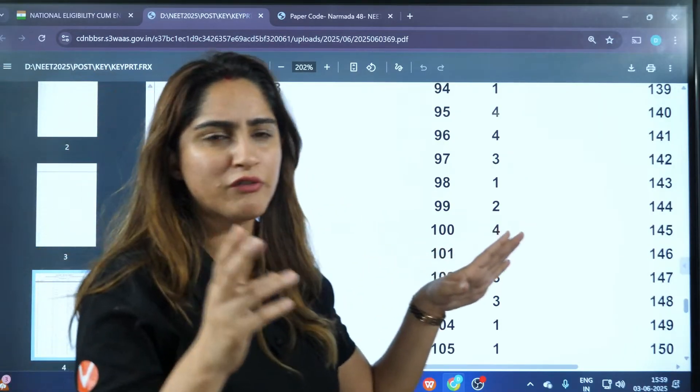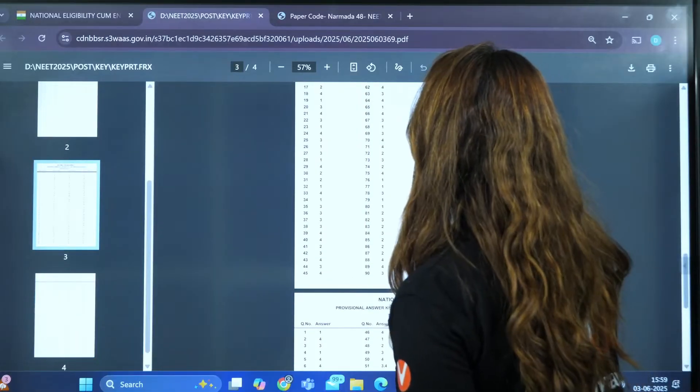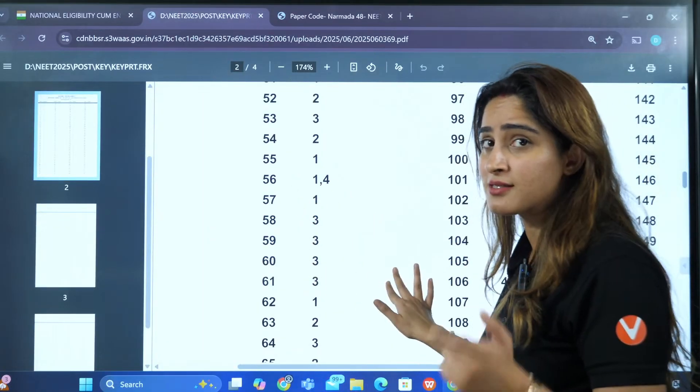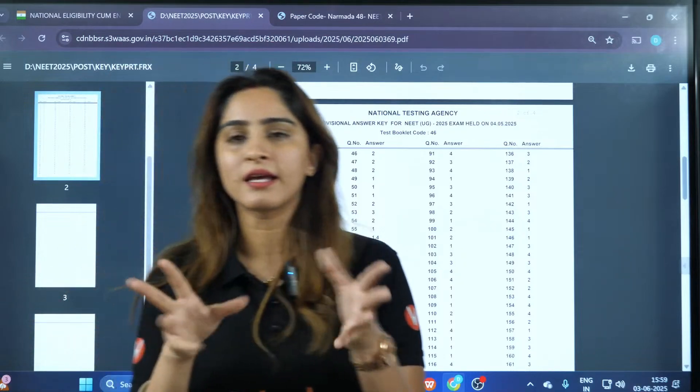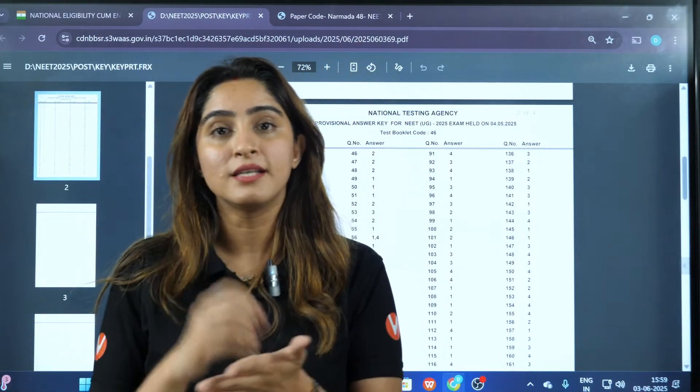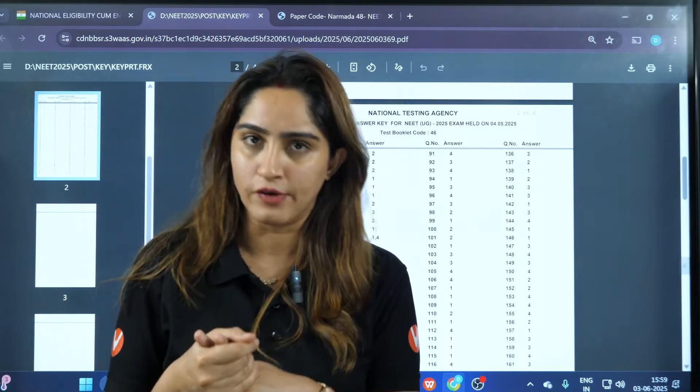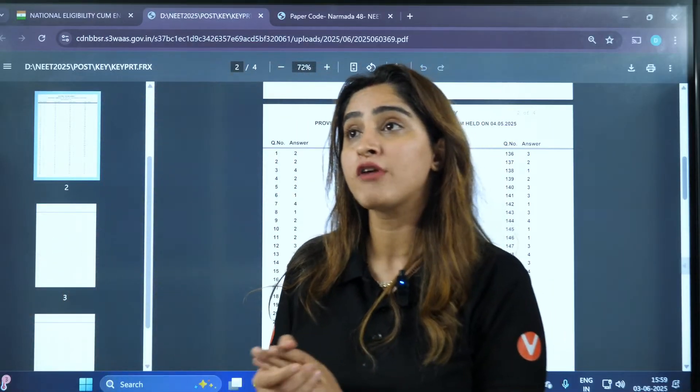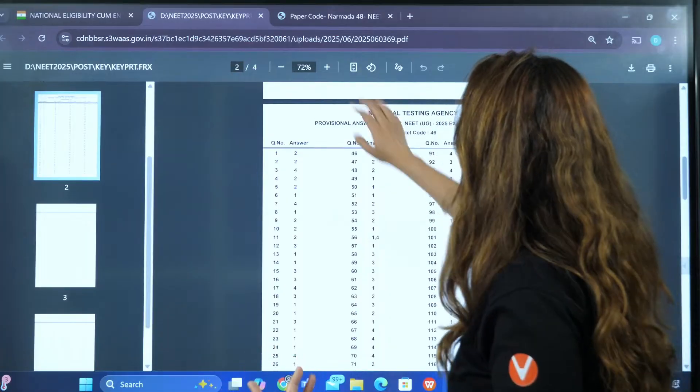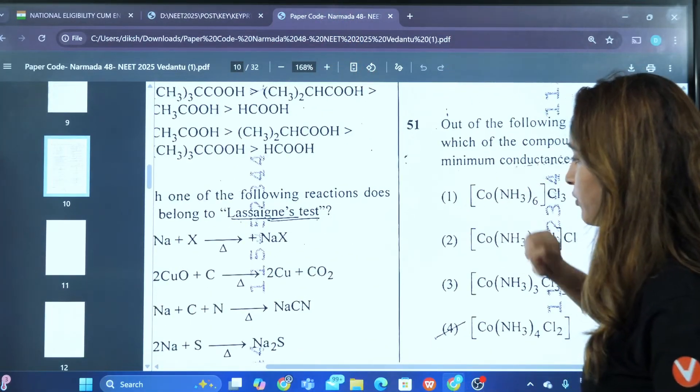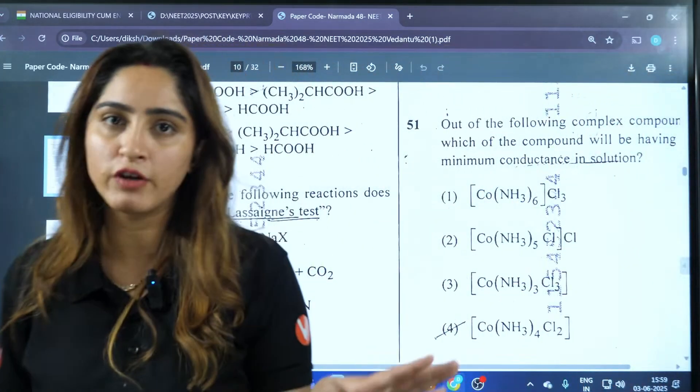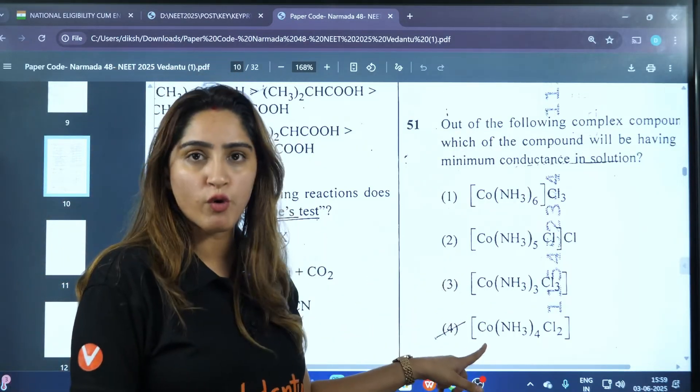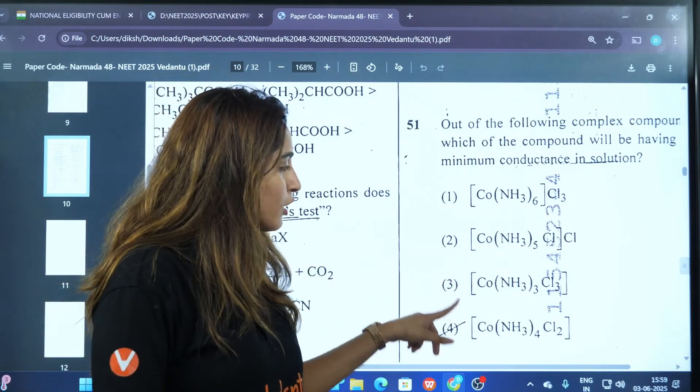In almost every booklet, there is one question which is having two answers. This is the question I am talking about. It is clear that NTA has given two answers for this question. Now students are asking, what if I picked one? What if I picked two? Then negative marking will be there. If you picked three, you will get plus four marks. If you picked four, you will also get plus four marks.